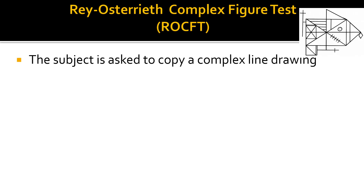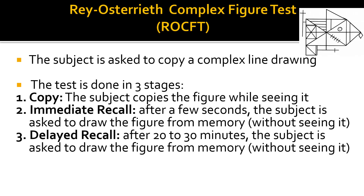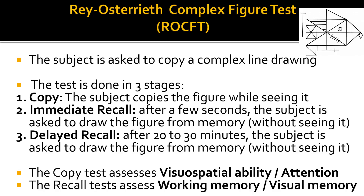This test is also called the Rey-Osterrieth complex figure test. In this test, the subject is asked to copy a complex line drawing. The test is done in three stages: copy (where the subject copies the figure while seeing it), immediate recall (done after a few seconds), and delayed recall (tested after 20 to 30 minutes). The copy test assesses visual-spatial ability and attention, while the recall test assesses working memory and visual memory.